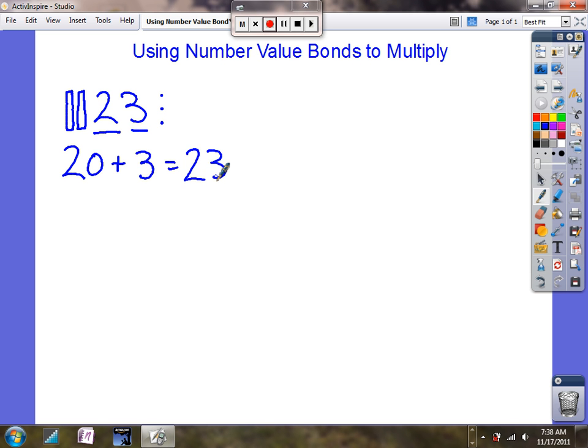This is the method that I want to use when I multiply. So, for example, if I have the number 23 times 4, instead of using repeated addition to figure out what 23 times 4 is, I can break 23 into its value, or number bonds, to get my actual product in this multiplication.